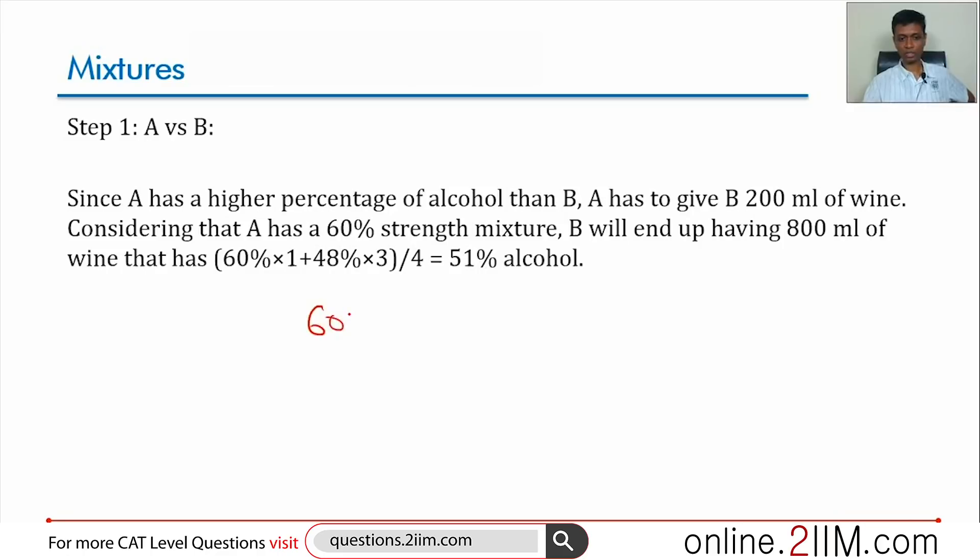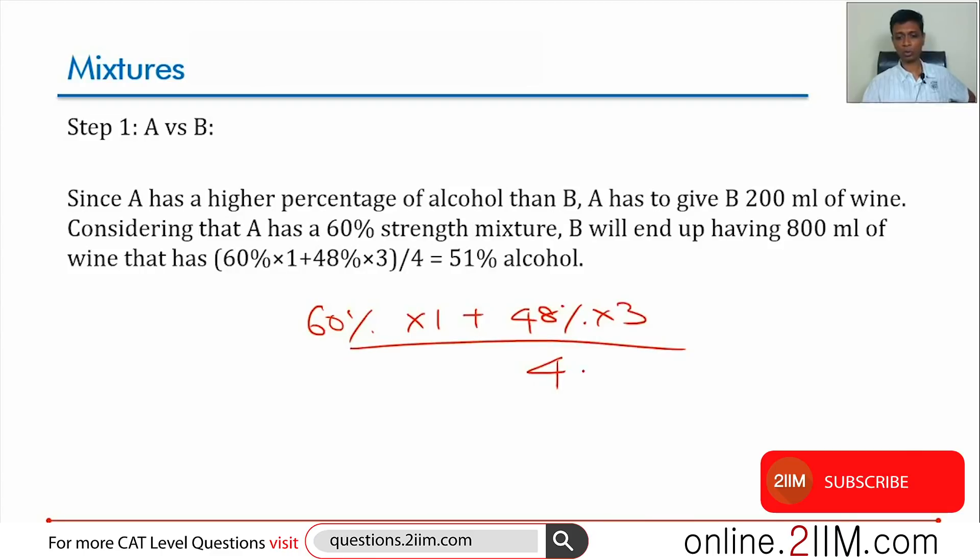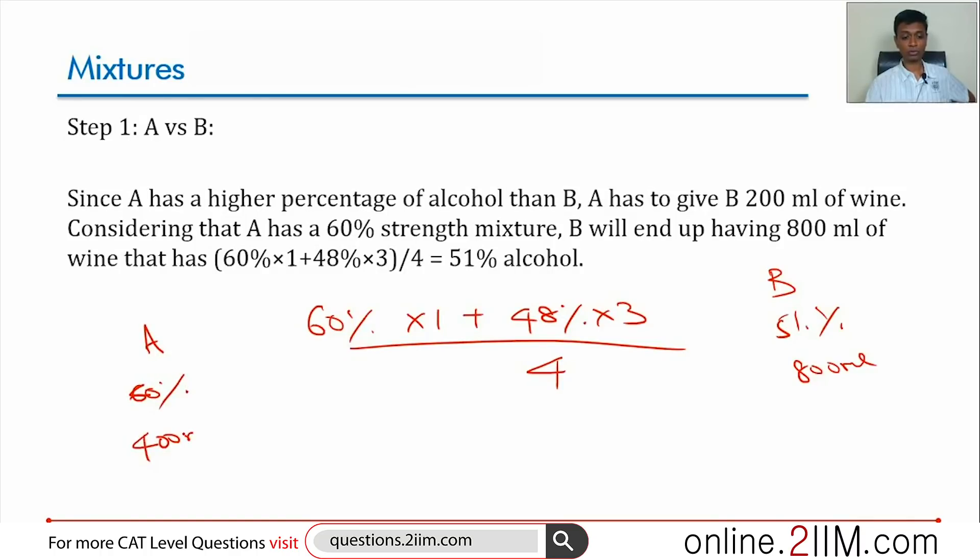B has 600 ml, so A takes 200 ml and pours it into B. So the percentage alcohol will become (60% × 1 + 48% × 3)/4. B will now have 51% alcohol. He'll have 800 ml of this. A will continue to have 60% alcohol and he'll have only 400 ml of this.